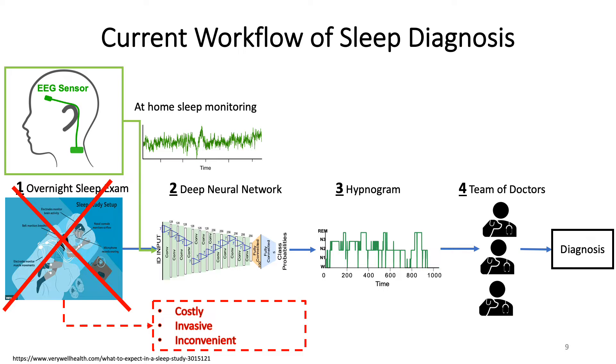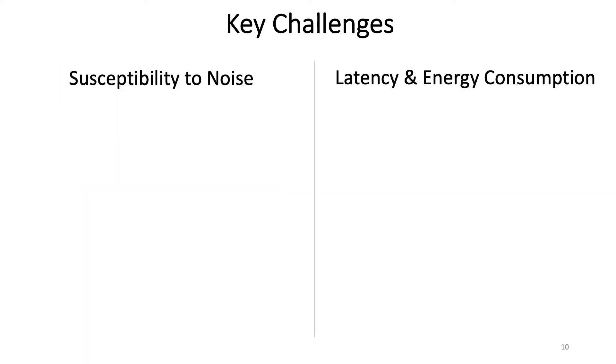However, for this new kind of workflow with the EEG sensor, new challenges arise with the deep neural network. In this paper, we identify two key challenges that are faced by current neural networks when deployed in the home setting.